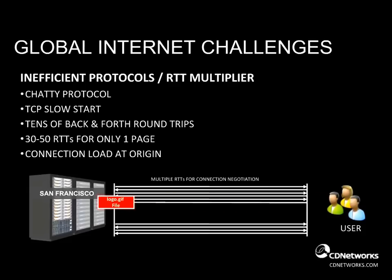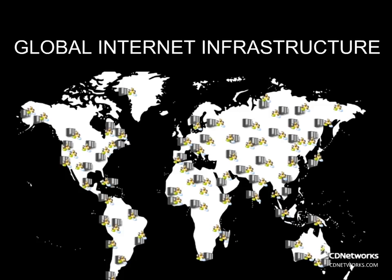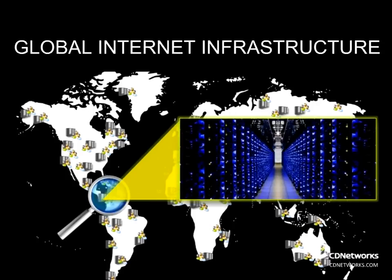CDNs were designed to overcome all three of these challenges. A CDN should have over a hundred POPs — points of presence — or data centers geographically distributed around the globe. And inside each POP are hundreds to thousands of servers. These POPs and servers are used to globally accelerate content.